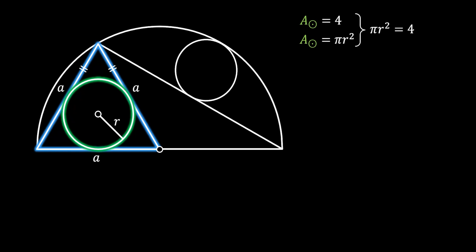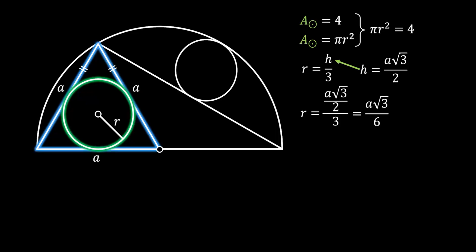Now we have a circle inscribed inside an equilateral triangle. We already have the formula for this. We know that the radius of the circle inscribed inside an equilateral triangle is equal to one-third of the height of this triangle. We also know that the height of the equilateral triangle is equal to the side times √3 over 2. Substituting the value of h, we get that r = a√3 over 6.